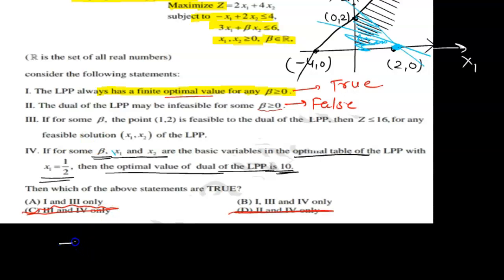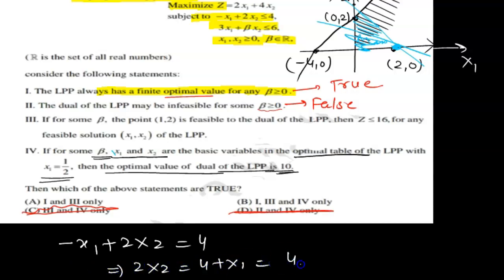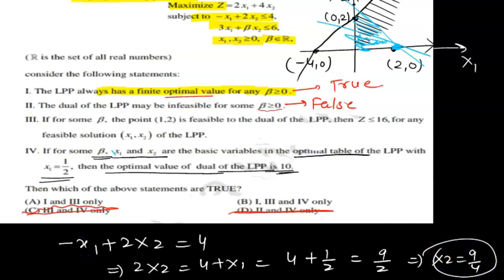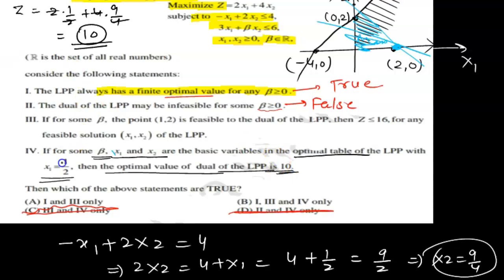Substituting x1 = 1/2: 2x2 = 4 + 1/2 = 9/2, so x2 = 9/4. The objective function value becomes: evaluating with these values gives 1 + 9 = 10. By the fundamental theorem of LP duality, if the primal has a bounded optimal solution, the dual also has a bounded optimal solution with the same value. Therefore, the dual optimal value is also 10, confirming Statement 4 is true.